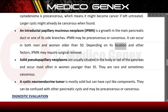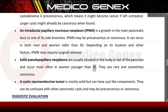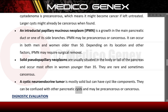Depending on its location and other factors, IPMN may require surgical removal. Solid pseudopapillary neoplasms are usually situated in the body or tail of the pancreas and occur most often in women younger than 35 — they are rare and sometimes cancerous. Cystic neuroendocrine tumors are mostly solid but can have cyst-like components; they can be confused with other pancreatic cysts and may be precancerous or cancerous.